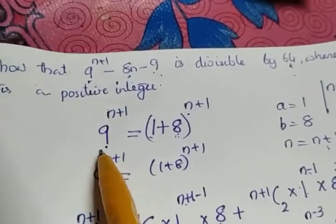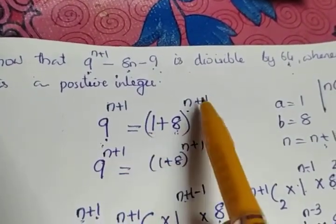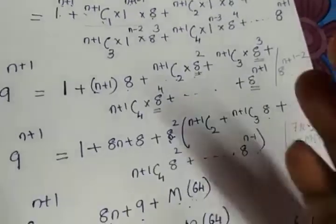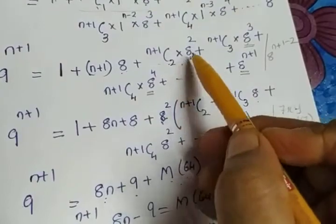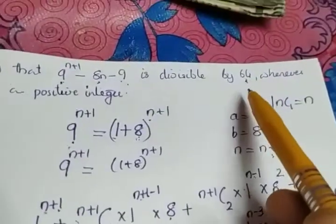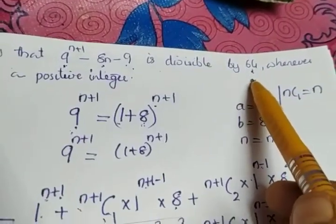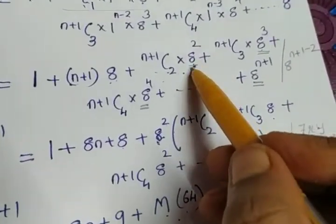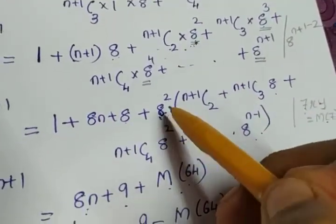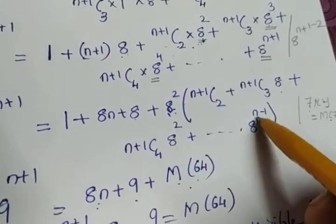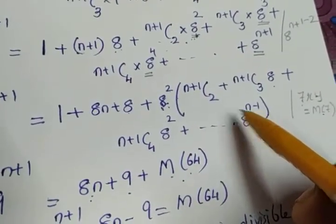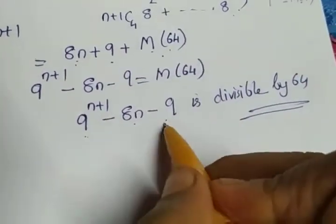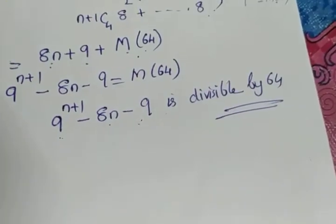To summarize: instead of 9, we write it as (1+8) raised to n+1, then apply the Binomial Theorem. From the third term onwards, we take 8² as common, because 8² = 64 and we need to prove divisibility by 64. So 8² times whatever the remaining term is will be divisible by 64, which proves the expression is divisible by 64.